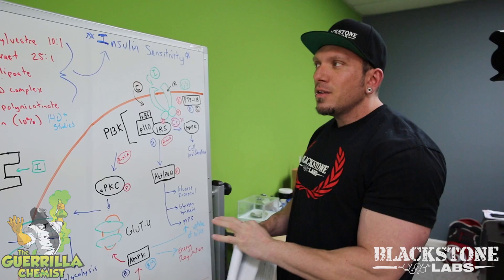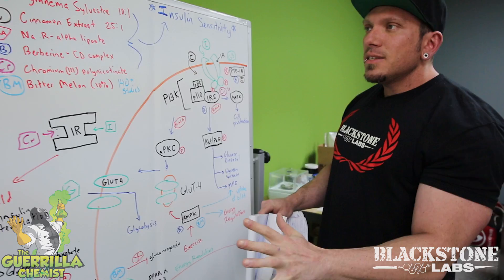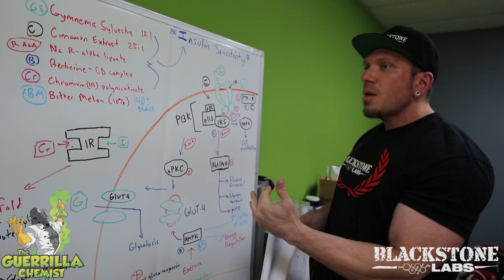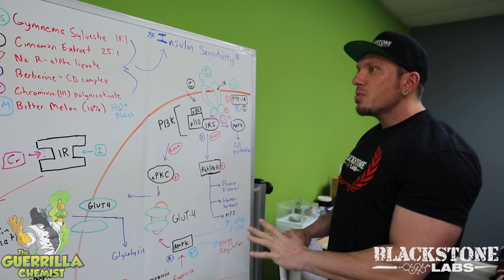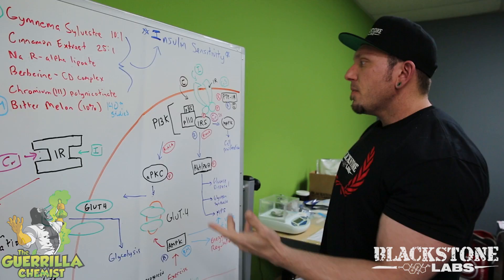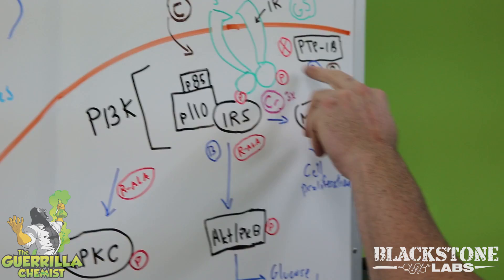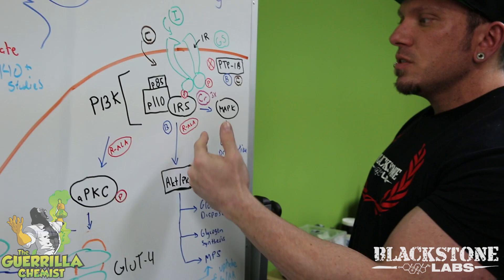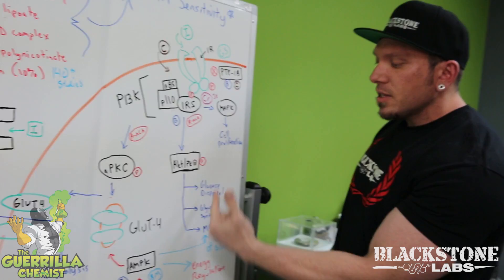If you look up studies on berberine, one of the first things that comes up is berberine and metformin. Metformin is a prescription medication given to type 2 diabetes patients to help lower blood sugar, and the data on berberine is comparable or better than metformin. Berberine is a super molecule — it blocks the PTP1B pathway which inhibits insulin signaling, and it increases formation of IRS (insulin receptor substrate), activating the AKT pathway. All of these things are now super up-regulated with berberine.